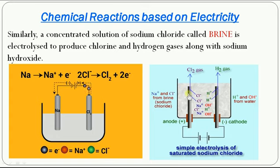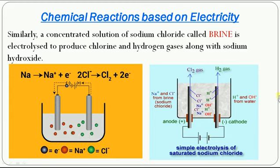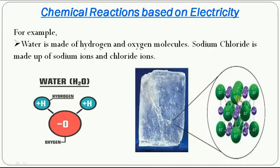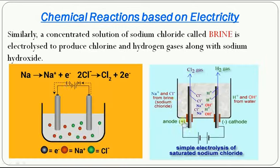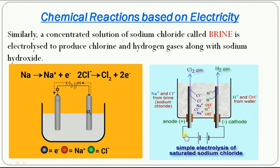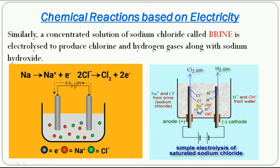One electrode is connected to the positive end of the battery — it is called the anode. The other is connected to the negative end of the battery — it is called the cathode. When you pass electricity through these rods, the sodium and chlorine, which are solids in the solid state where ions cannot move, once dissolved in water, these ions will ionize. Sodium ion and chloride ion will ionize and move in the solution. Once electricity is passed, positive ions like sodium ion are attracted towards the opposite electrode — sodium is positive, so it moves near the cathode. Similarly, chlorine is negative, so it goes towards the anode because it is positive.